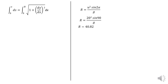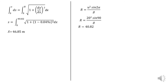We have y equal to x²·tan(α) divided by g. We need to perform the integration with upper limit and evaluate S equals the integral of the square root of 1 plus (1 minus 0.049x)² dx. After calculating this integration, the result is S equals 46.8.